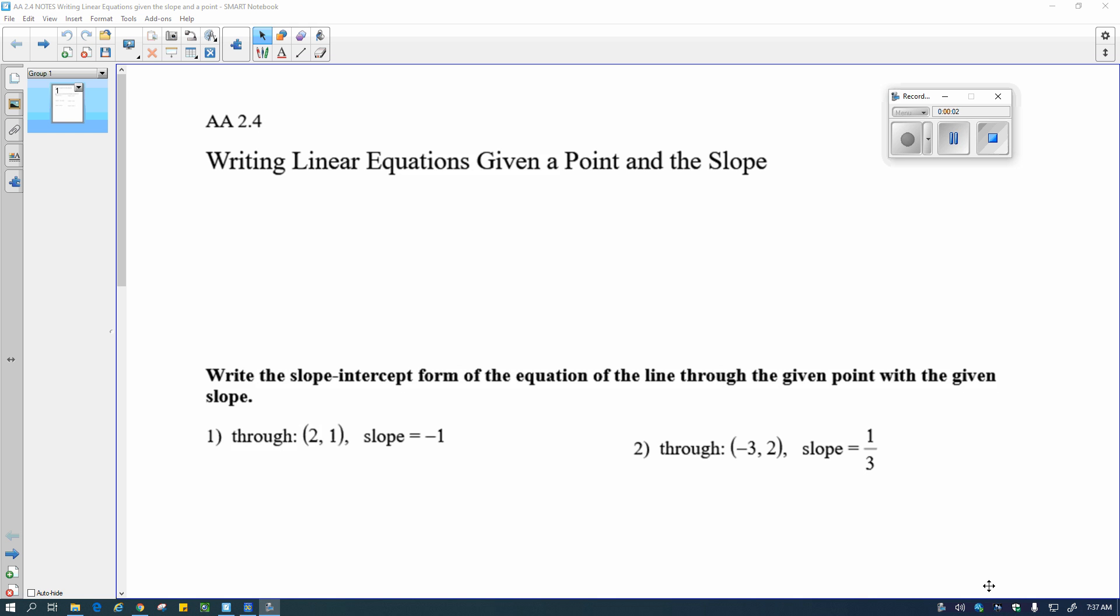Okay, so we're writing linear equations given a point and a slope. We're going to use something called point-slope form of the equation. And that looks like this: y minus y₁ equals m times x minus x₁.